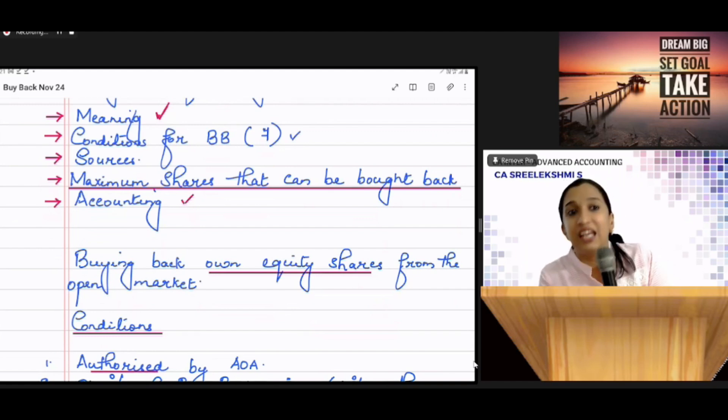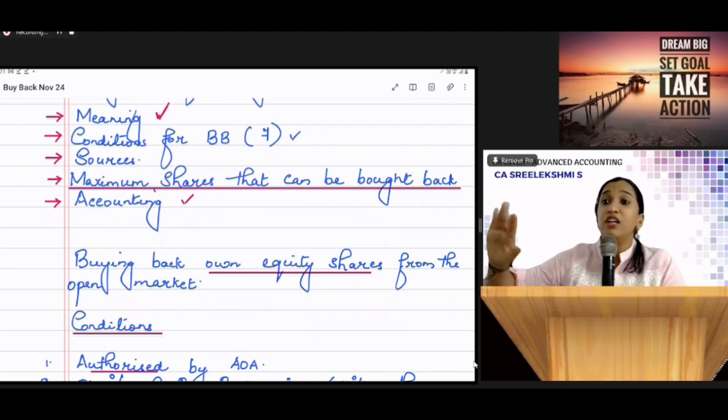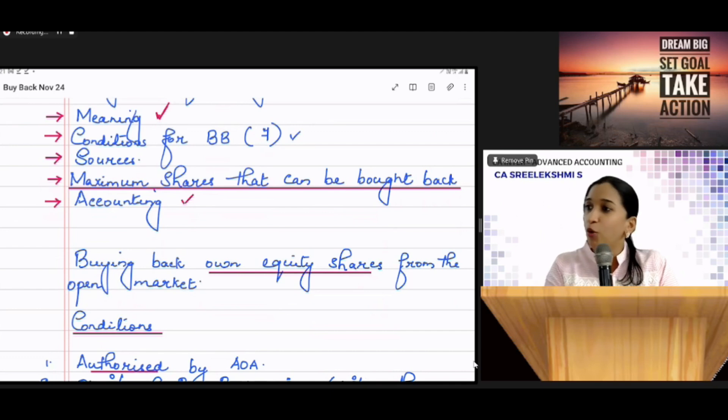But you cannot take a loan, you cannot issue debentures that cannot be used for buyback. Only internal, external sources.